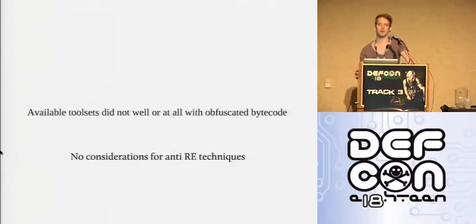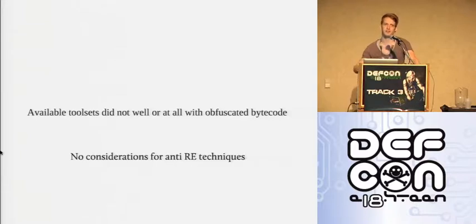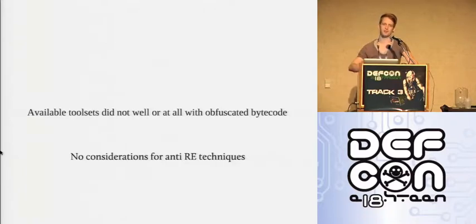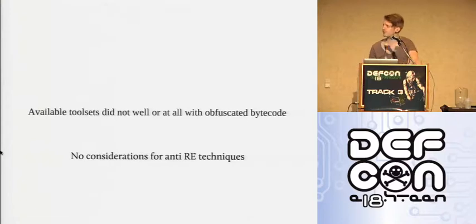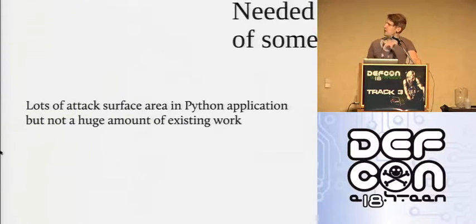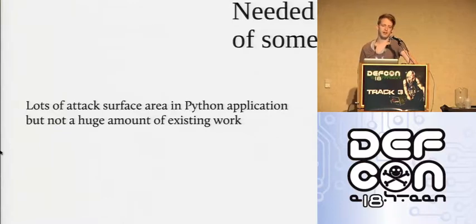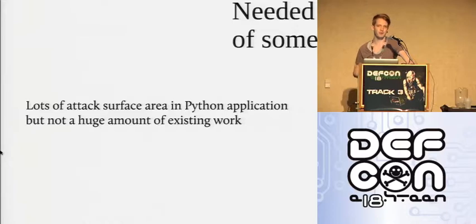Most of the kits - the decompilers and disassemblers - just assume that the code you're dealing with is standard bytecode and that people won't have gone to any lengths to try and stop you reversing it. So none of the toolkits apart from this one have any understanding or attempt to get around obfuscations that might be in place. Also, there's a huge amount of Python code out there, a lot of it used in web applications and remote applications. There's a big attack surface area, but not much work in Python-specific techniques.